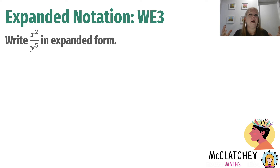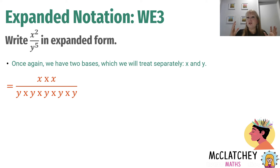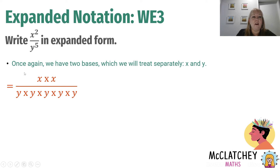This question asks us to write x to the power of two divided by y to the power of five in expanded form. Remember the fraction bar means divided by, so we'll keep it in fraction form. We've got two different bases and we treat those separately. On the top of the fraction we write x times x, and at the bottom we write y times y times y times y times y — five Y's multiplied together. Just check at the end that you've got the right number of x's and y's.